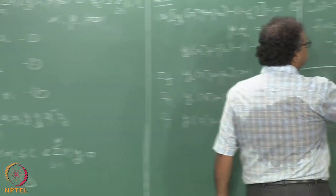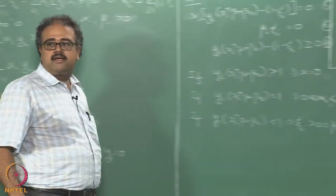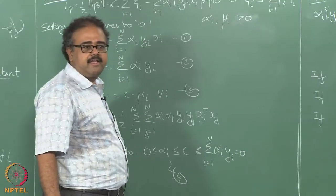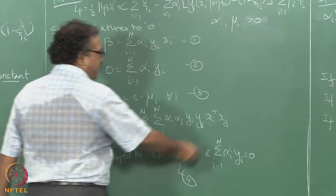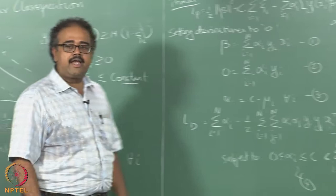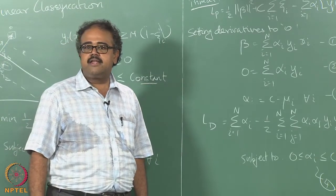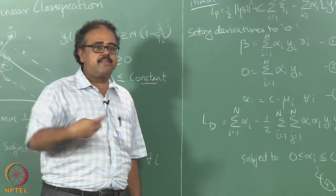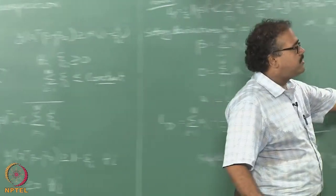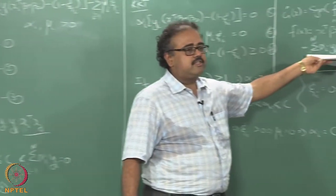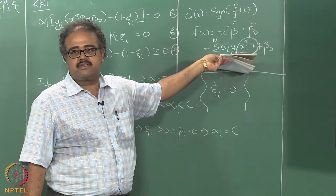If you remember, I asked you to note the fact that I am using an inner product there. X_i transpose X is the inner product of two vectors, and the way I wrote the dual also I had only inner products in there. So in fact, if I want to evaluate the dual, I need to only know the inner products of the two vectors. Likewise, if I want to finally evaluate and use the classifier that I learned, I still need to only find inner products.